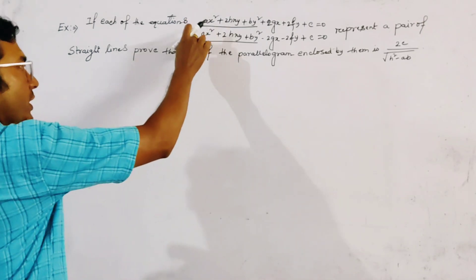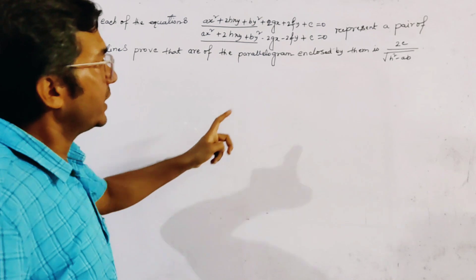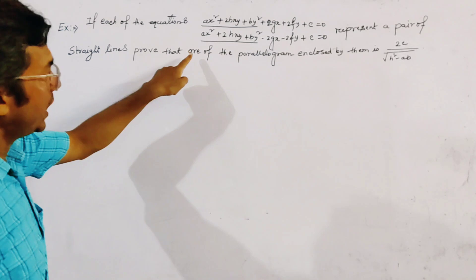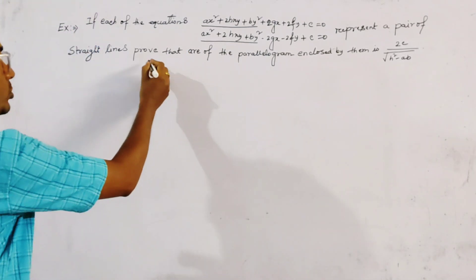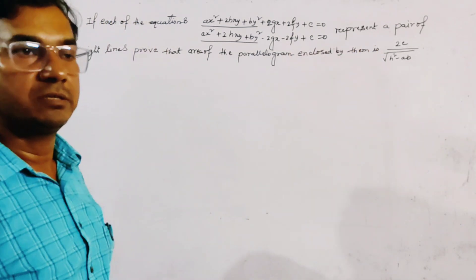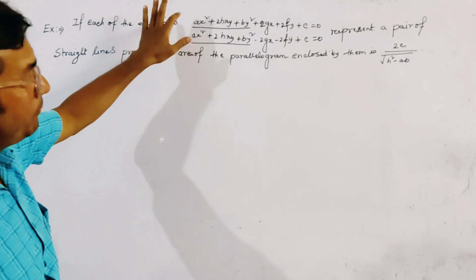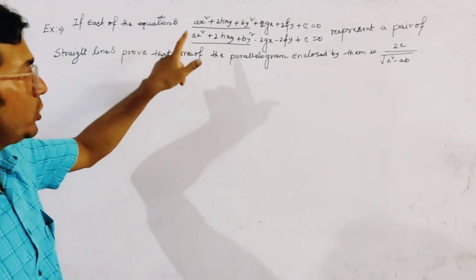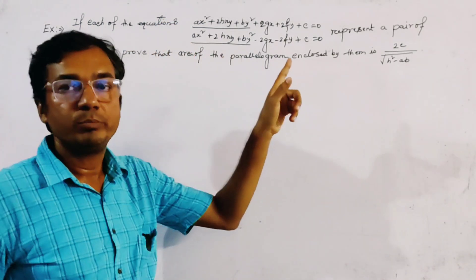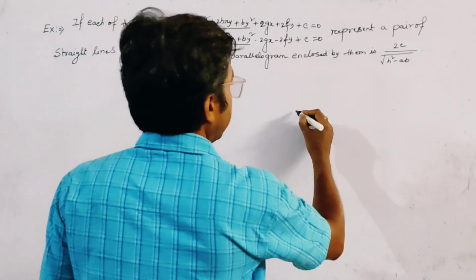These two pairs of straight lines represent pairs of parallel straight lines, so they must form a parallelogram. We have to prove that the area of the parallelogram enclosed by them is given by the stated formula. Let the parallelogram be of this form.